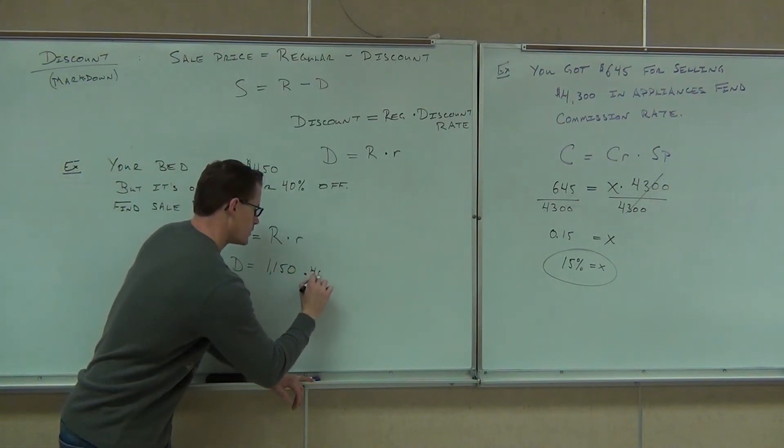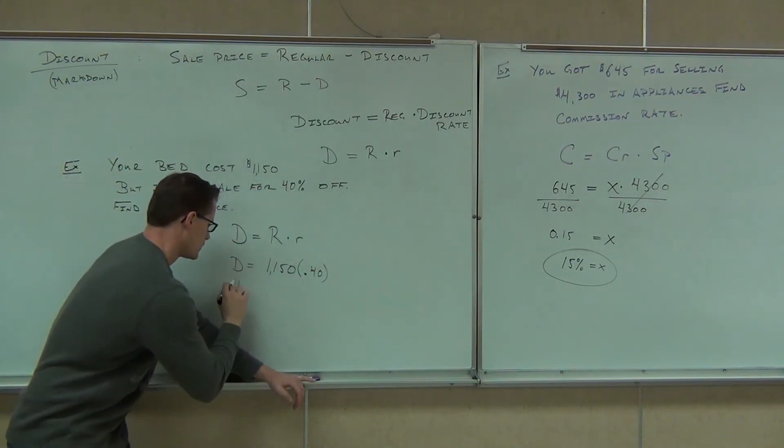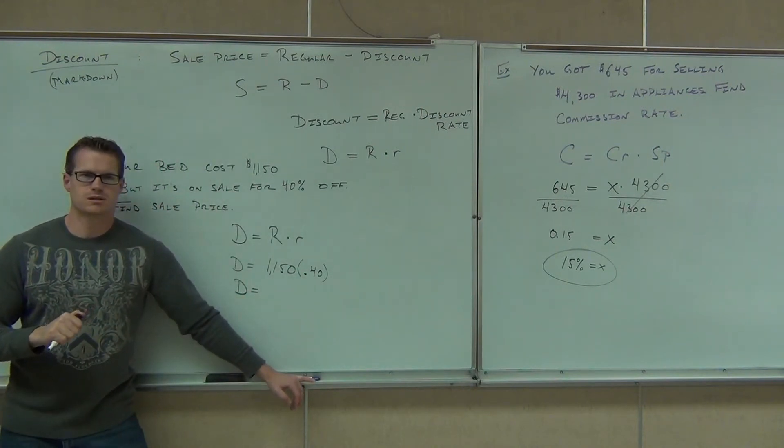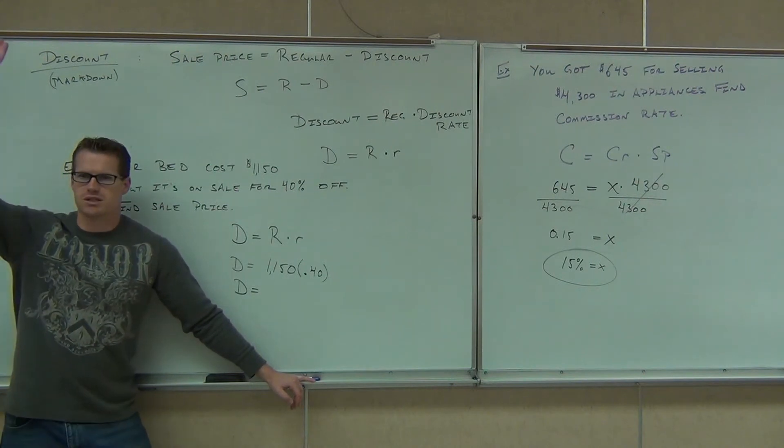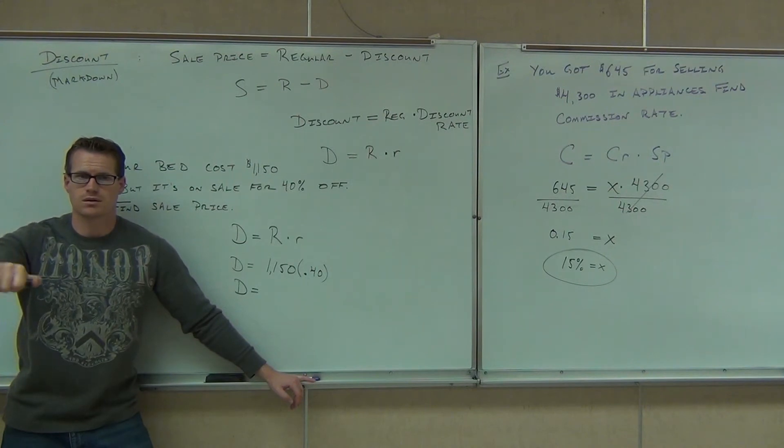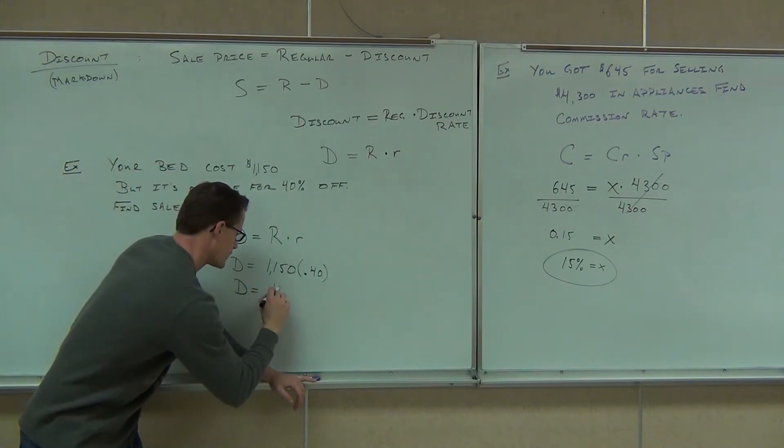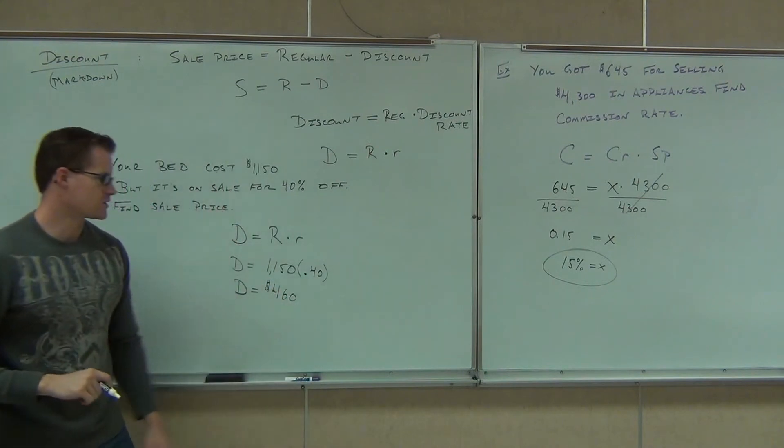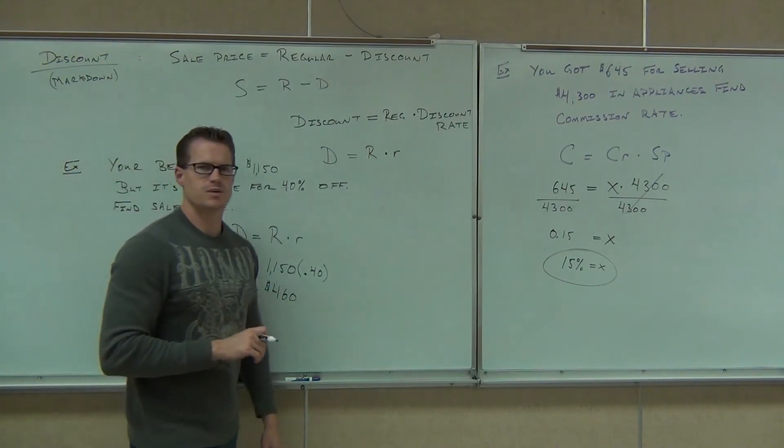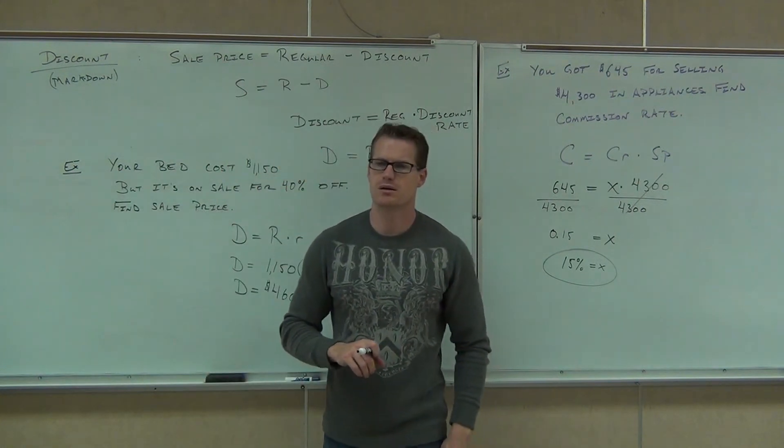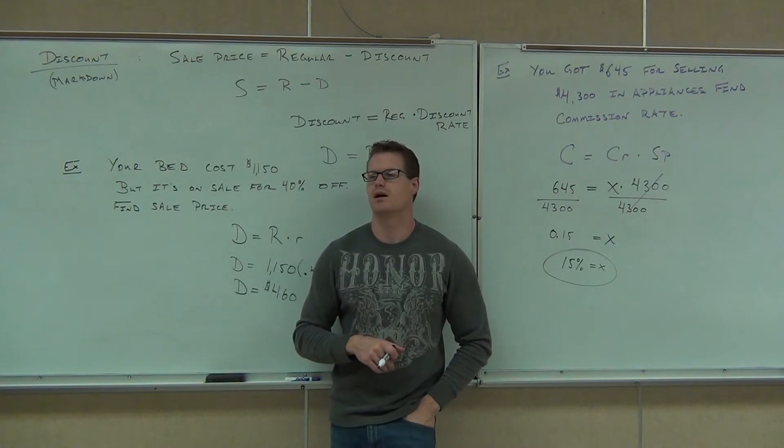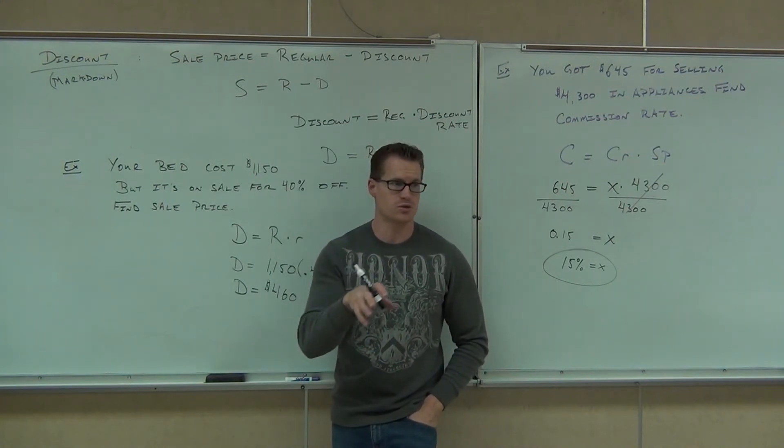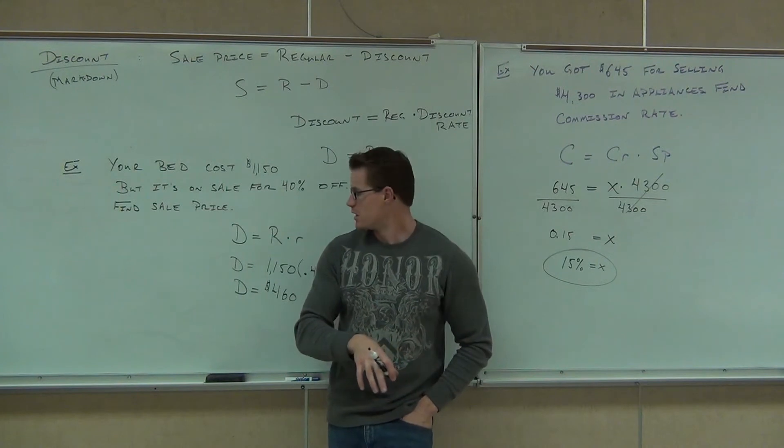What is it? Did you figure it out? 460. How many people got 460 out of that? Did you? You guys in the back? Yes, no? Are you okay with that? $460. Hey, does that mean you're going to spend $460 on this bed? No. What's the $460 represent? What's that mean? Knocked off. Okay, so the discount, what's being knocked off or the amount that you're saving here is $460.